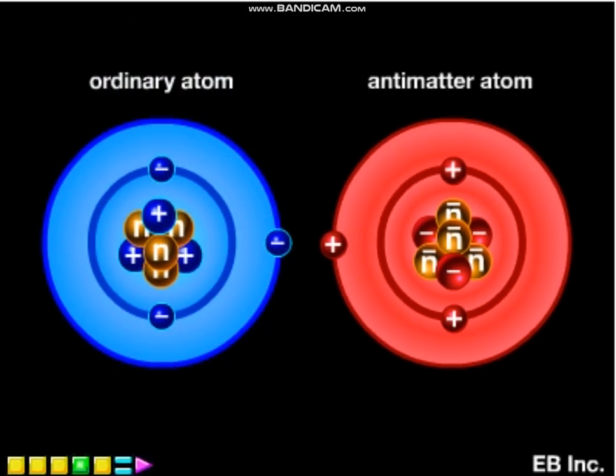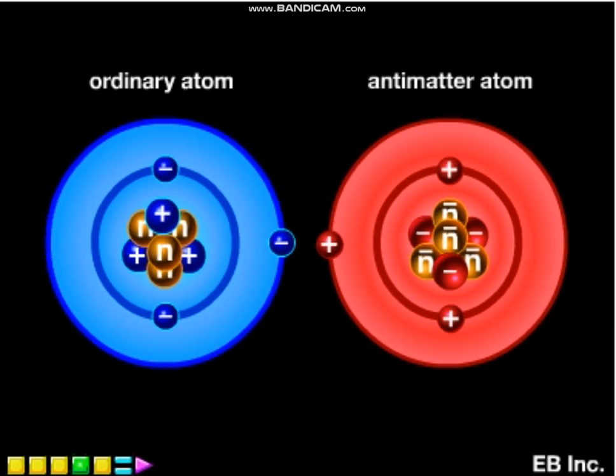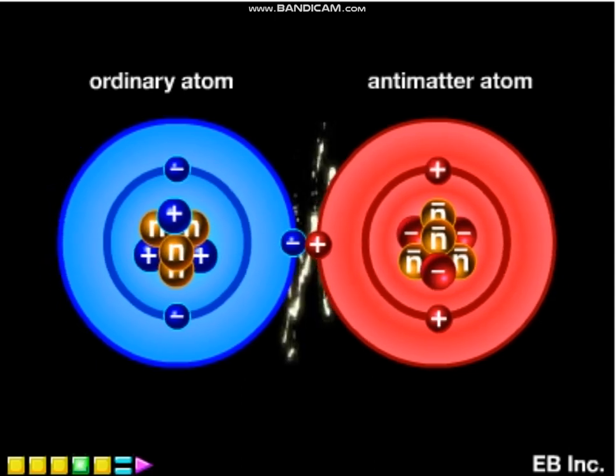Antimatter, if it is not confined in special traps to isolate it, has an extremely short life, on the order of billionths of a second, before it comes into contact with ordinary matter and is annihilated. Matter and antimatter eliminate each other on contact, with a complete release of the energy held in both.